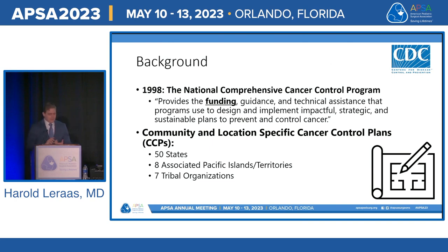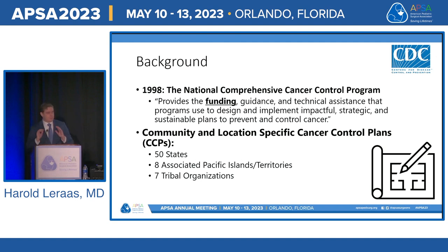In 1998, the CDC created the National Comprehensive Cancer Control Plan. The goal of this program was to provide funding, guidance, and technical assistance to design and implement impactful strategic and sustainable plans to prevent and control cancer — essentially creating location-specific cancer control plans for the 50 states, eight territories, and seven tribal organizations.